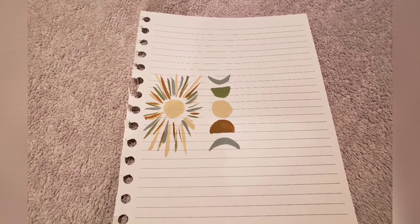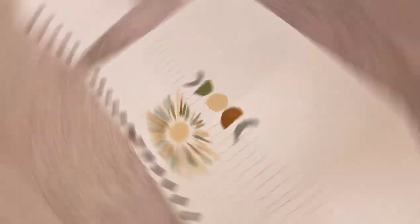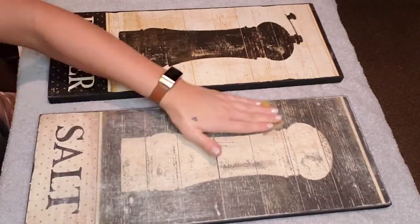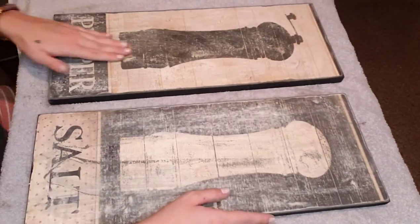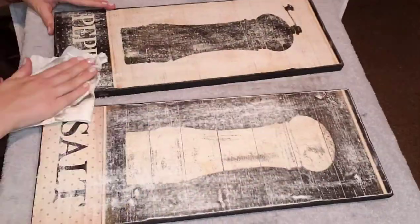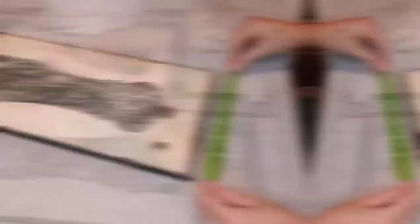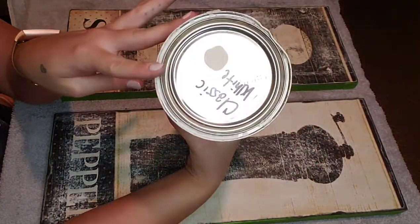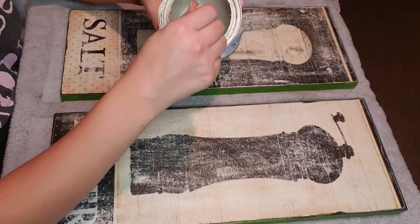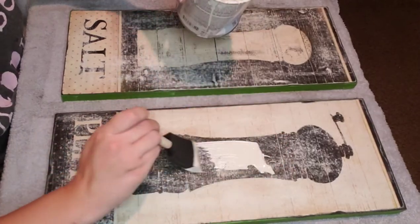Before I sanded these pieces with 220 grit sandpaper, then cleaned them off with Mrs. Meyer's Clean Day and taped around the edges because I liked how they were already black.